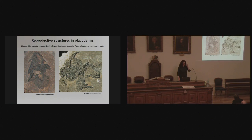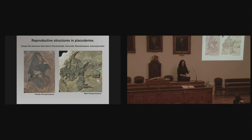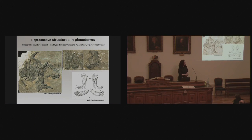We have known for quite a while that certain placoderms didn't reproduce externally — they had internal fertilization. That was in the group the ptyctodontids. Here we have Rhamphidopsis from Scotland — this is the male. Here's the head shield, here's the trunk shield, here's the vertebral column — the backbone. Here is the pelvic girdle, quite different from the other pelvic girdle I showed you. Just behind the pelvic girdle is an unusual pair of structures, and if we look at those in a bit more detail, there are a pair of structures just behind the pelvic girdle with these scales or denticles on them — quite distinctive.